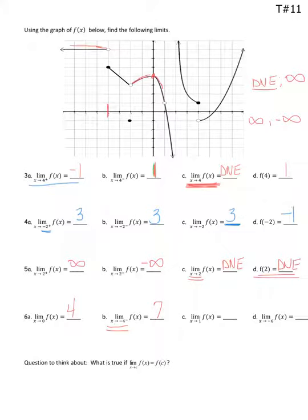What about the limit as x approaches 1? Here's an x value of 1. I'm approaching from the left and from the right at the same time — my fingers are pointing to the same y value. That open circle does not matter, and it is 1. So even though the limit exists, the function does not because there's no closed dot. And then finally, the limit as x approaches negative 6: negative 6 is way out here. Approaching negative 6 from the left and right, the limit from left and right are the same — that's also 7.